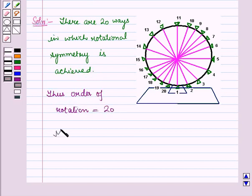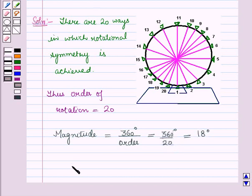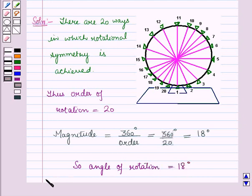Now we will find the magnitude, that is the angle of rotation, which is equal to 360 degrees divided by the order of rotation. This is equal to 360 degrees divided by 20, which is equal to 18 degrees. So we rotate at an angle of 18 degrees to attain rotational symmetry.